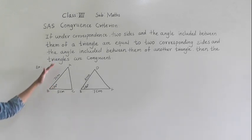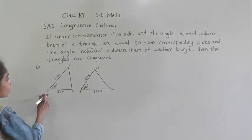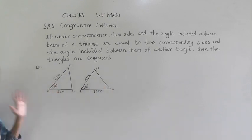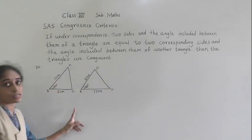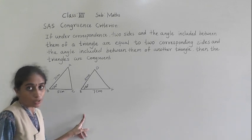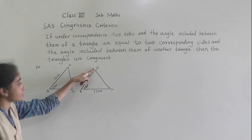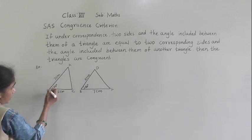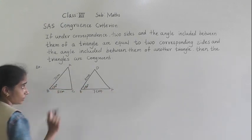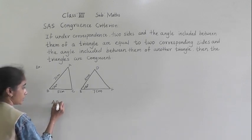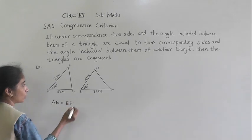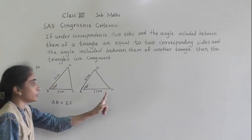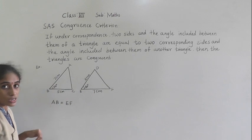Now we see one example. See here, these two triangles are given. In these two triangles, this is triangle ABC and this is triangle DEF. We have to see if both triangles are congruent or not. Now, if you look, AB is equal to EF. Why? Because AB is 7 cm and EF is 7 cm — both have the same measurement.